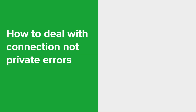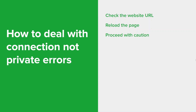Here's more in-depth information on how to deal with these errors. First, ensure that you've entered the correct website address and haven't made any typo errors, as a small mistake in the URL can lead to the error. It's also possible the error occurred due to a temporary glitch, so try refreshing the page — click the refresh button or press F5 on your keyboard. If you trust the website and need access to it despite the error, you can choose to proceed with caution, but definitely avoid entering any sensitive information as your connection may not be fully secure. Cached data or cookies stored by your browser can also sometimes cause conflicts, so try clearing your browser's cache and cookies to see if that resolves the issue.